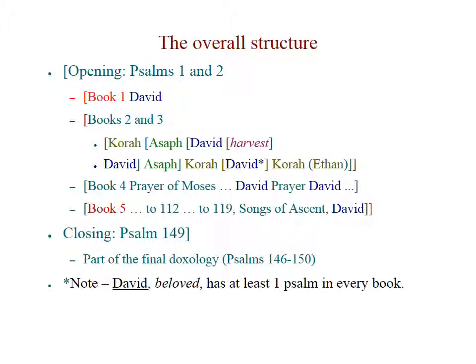Book 4 is a unit, almost of itself — a response organized around the name of Moses. There's also a prayer of Moses at Psalm 90 and an answering prayer in Psalm 102, surrounded by Psalms of David. Books 1 and 5 organize themselves around the acrostics, and we've already seen the opening and closing: Psalm 2 and Psalm 149.